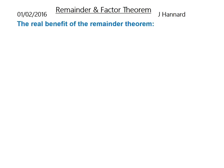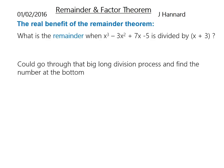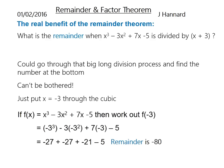So the real benefit of the remainder theorem is when you're posed with a problem like this. What is the remainder when x³ - 3x² + 7x - 5 is divided by x + 3? Now I could go through the big long division process and find the number at the bottom. But who can be bothered for that really. When there's a much easier way. You'll do this every time. Just put x = -3 through the cubic like we just did, and apparently the remainder is -80 when you put that through. But you'd get exactly the same answer if you wanted to do the long division. But usually the examiner will guide you towards using the remainder theorem or algebraic division.